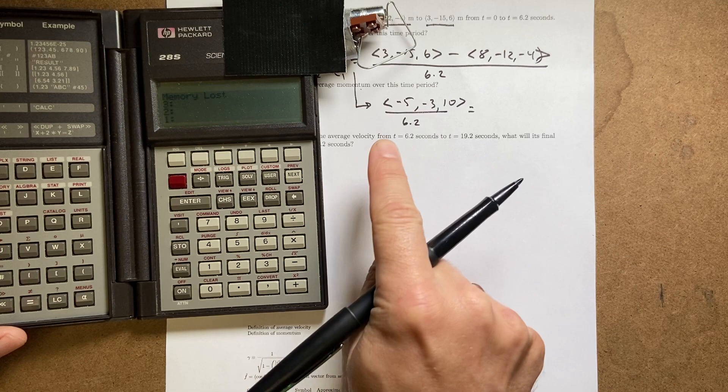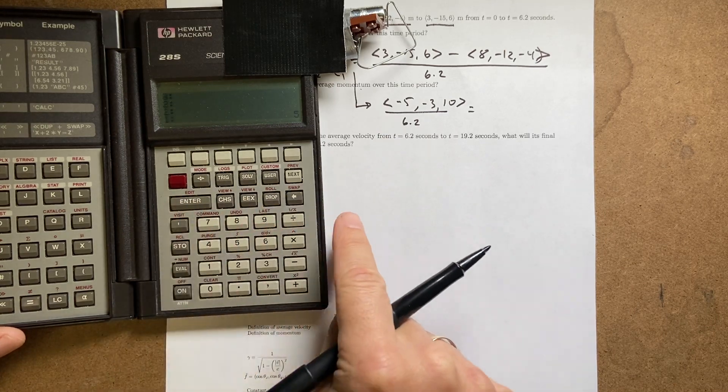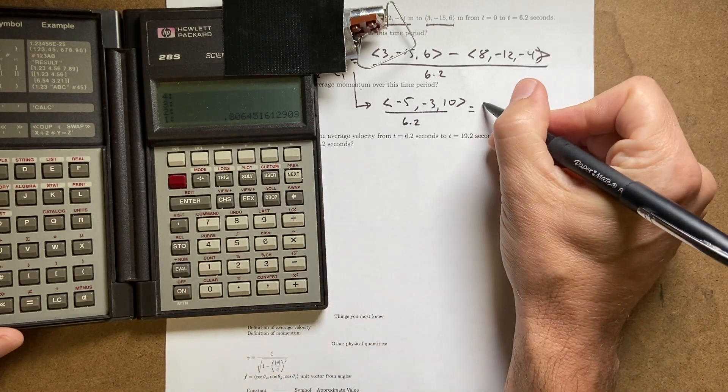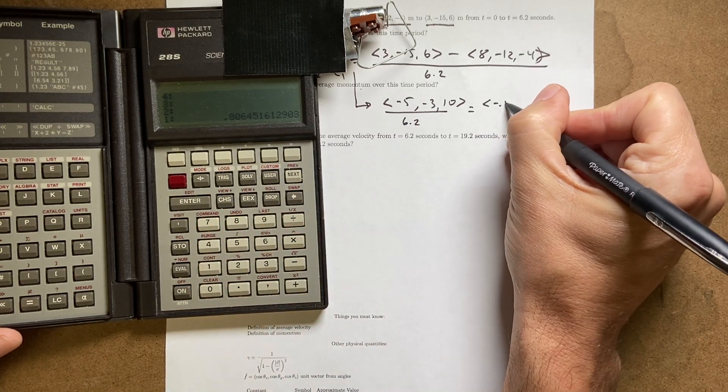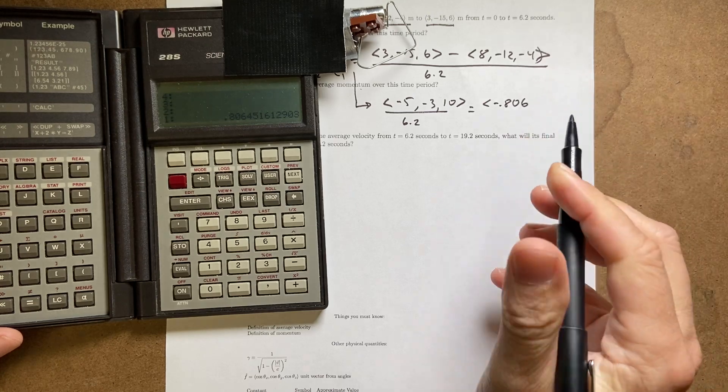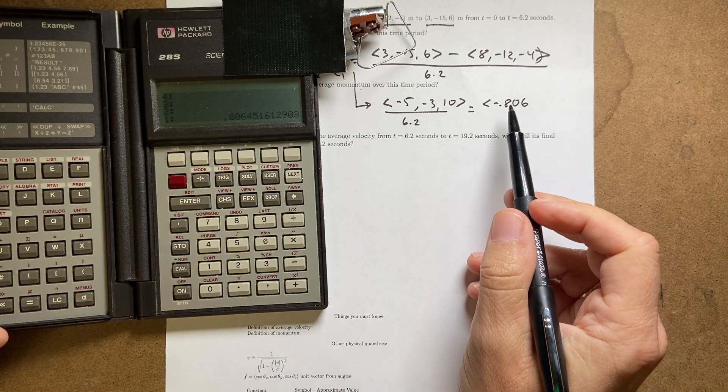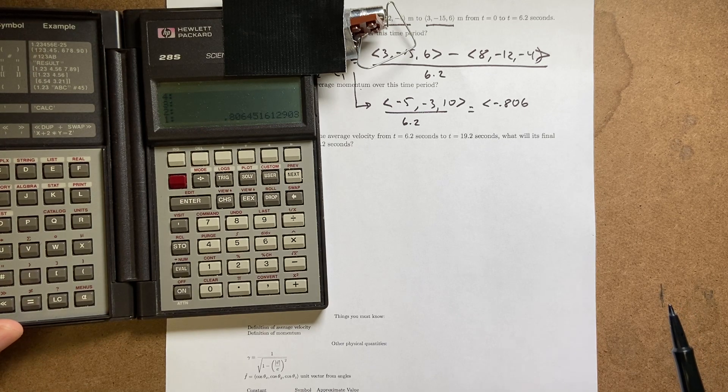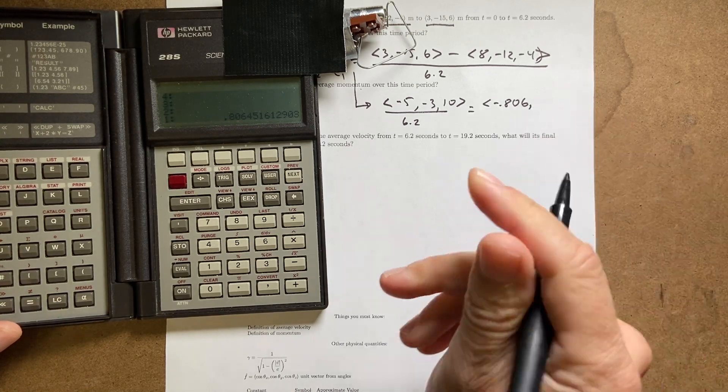I'm going to enter this number in first. So I'm just going to do 5, enter, 6.2 divided by. So I get negative 0.806. There was a question about how many decimal places should you carry it to. I don't really care. It doesn't matter. If we're measuring and doing an experiment, it would matter. But in this case, it doesn't matter.